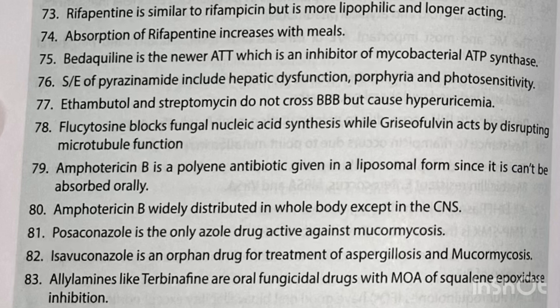Flucytosine blocks fungal nucleic acid synthesis while griseofulvin acts by disrupting microtubular function. Amphotericin B is a polyene antibiotic given in liposomal form since it cannot be absorbed orally, and is widely distributed in the whole body except in the CNS. Posaconazole is the only azole drug active against mucormycosis. Isavuconazole is an orphan drug for treatment of aspergillosis and mucormycosis.